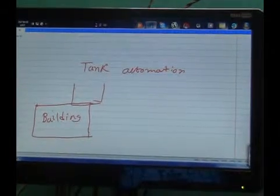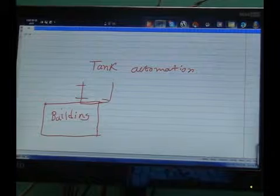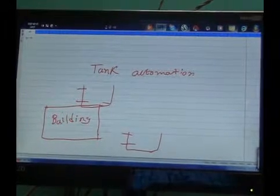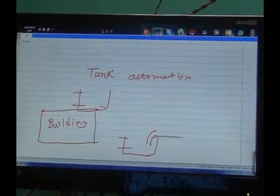You have an upper tank with upper and lower limit, and a lower tank with upper and lower limit. Water comes from the municipality supply.